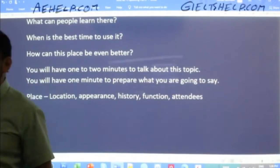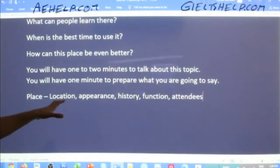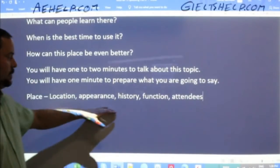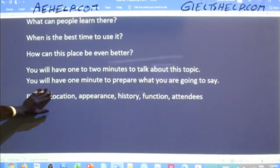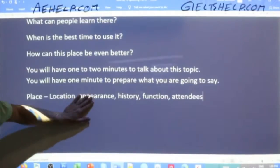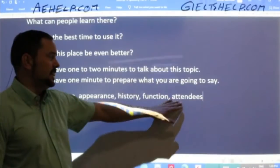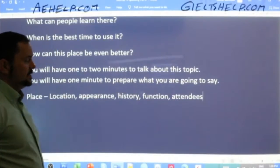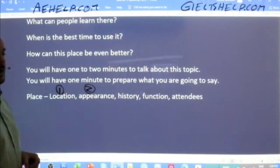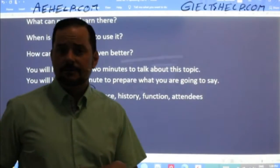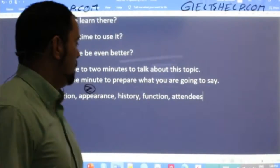The order doesn't have to be exactly this — you have a little bit of flexibility when talking about a place. It's definitely a good idea to talk about its location first and its appearance next. History, function, and attendees have more flexibility. We want to start with location and appearance because we want to create a visual image for our listeners.